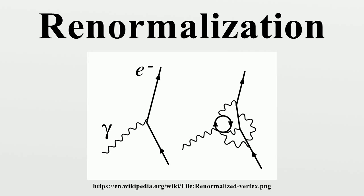According to renormalization group insights, this splitting is unnatural and actually unphysical, as all scales of the problem enter in systematic continuous ways — running couplings to minimize the contribution of loop diagrams to a given calculation. One chooses a renormalization point close to the energies and momenta actually exchanged in the interaction. However, the renormalization point is not itself a physical quantity. The physical predictions of the theory, calculated to all orders, should in principle be independent of the choice of renormalization point, as long as it is within the domain of application of the theory. Changes in renormalization scale will simply affect how much of a result comes from Feynman diagrams without loops, and how much comes from the leftover finite parts of loop diagrams.